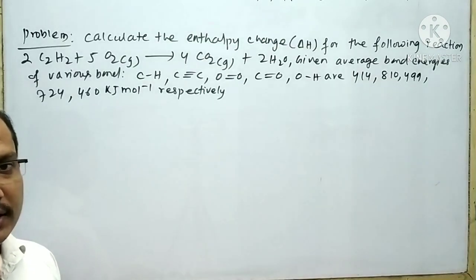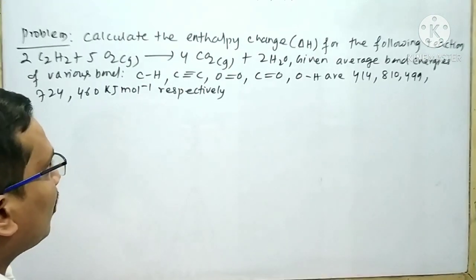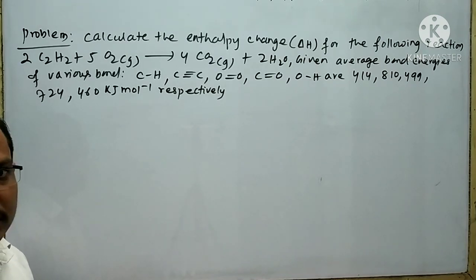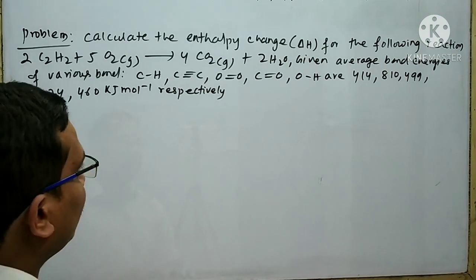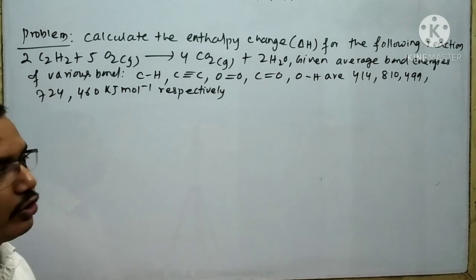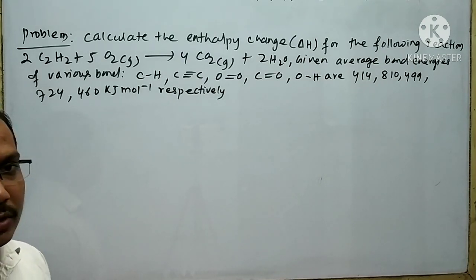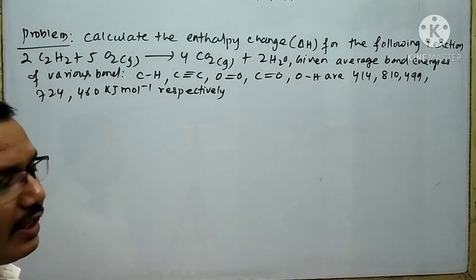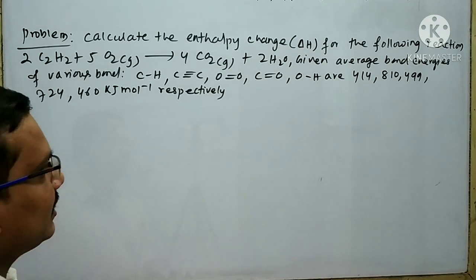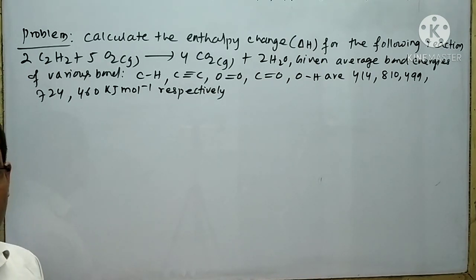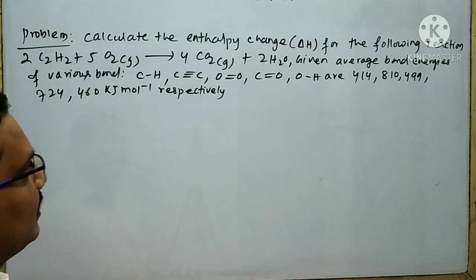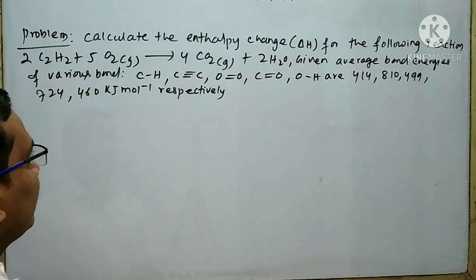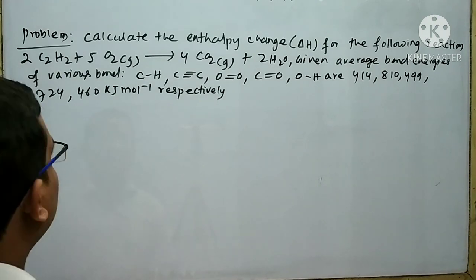To solve this type of problem, it is highly necessary to calculate the number of bonds present in a molecule. Without knowing the number of bonds present in a molecule, we cannot solve such problems. For knowing the number of bonds, it is highly necessary to draw the structure of the molecule. So, at first, write the structure of the reactants and the products present in the reaction.